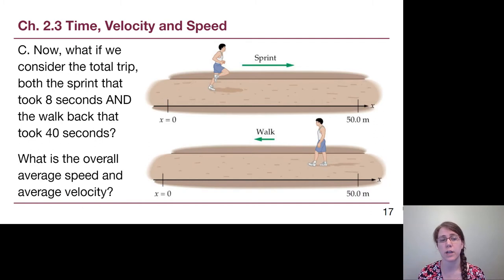Alright, so let's think about the entire trip. The sprint and the walk back. So if we think about the speed, we need to know the total distance. That person's step counter for the day will add up 50 meters and 50 meters. The distance is one that does not care about what direction we are going. And so we end up with a speed of 100 meters divided by 48 seconds and we get a little over 2 meters per second, 2.1 meters per second.